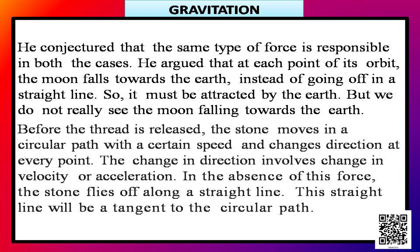But we do not really see the moon falling towards the earth. We see the moon moving round the earth — it never comes towards earth or falls on earth. Neither does earth fall on the sun; otherwise there would have been destruction overall. So why is it so? Let us try to understand the motion of the moon by recalling Activity 10.1 which is given in your book.